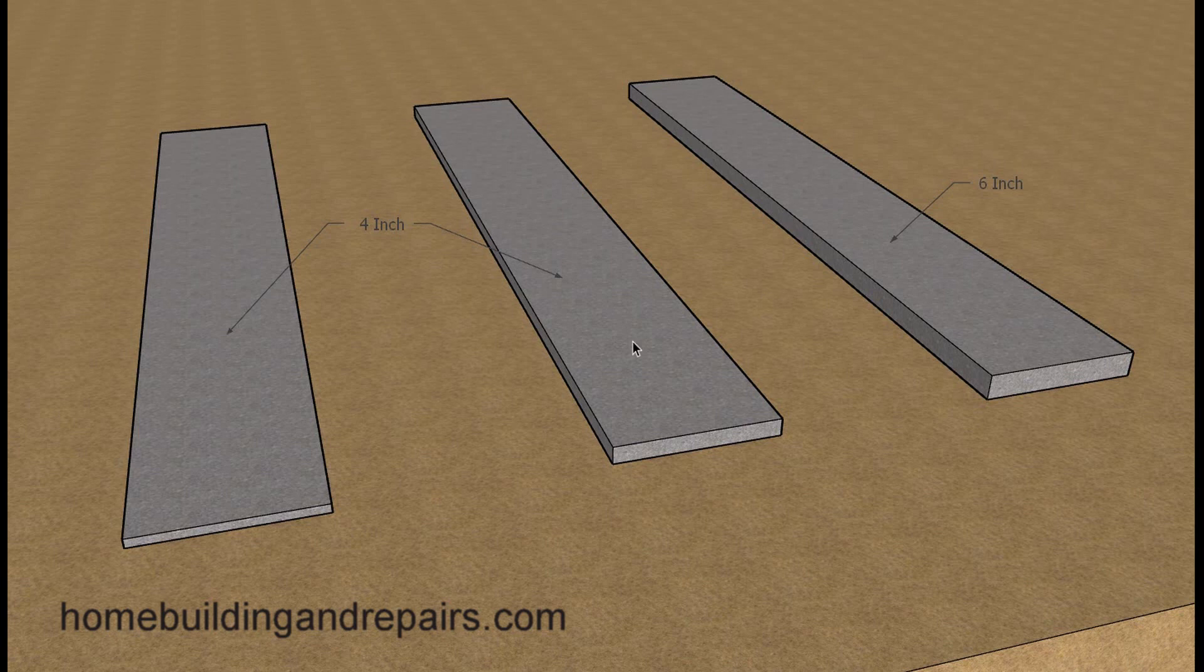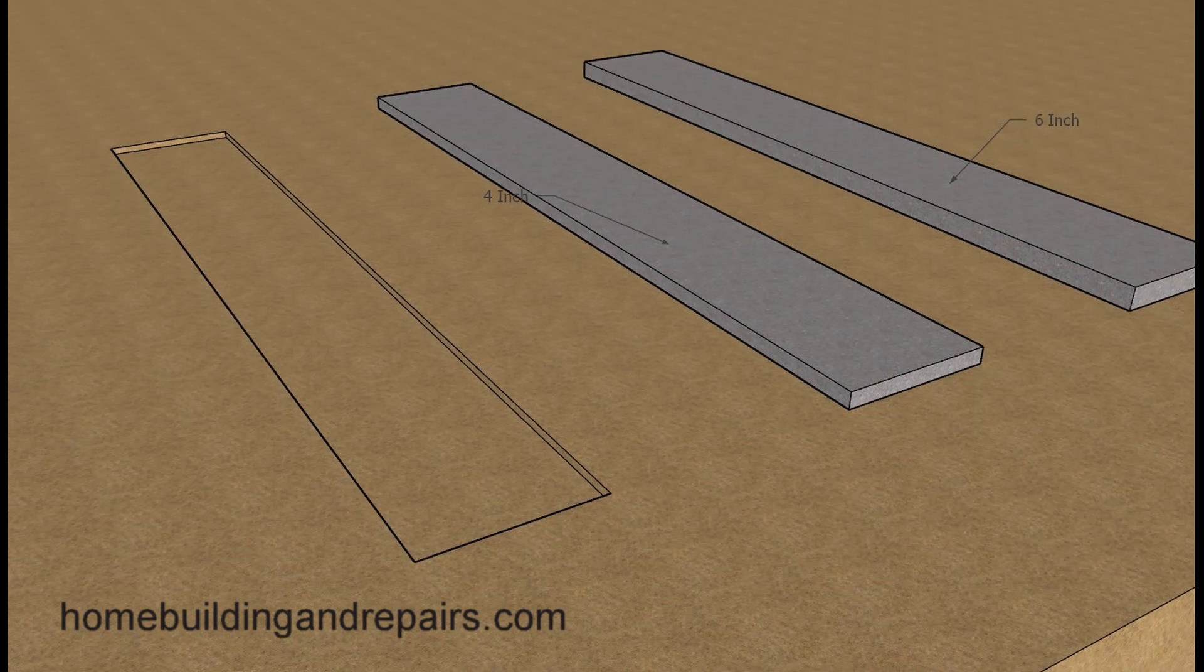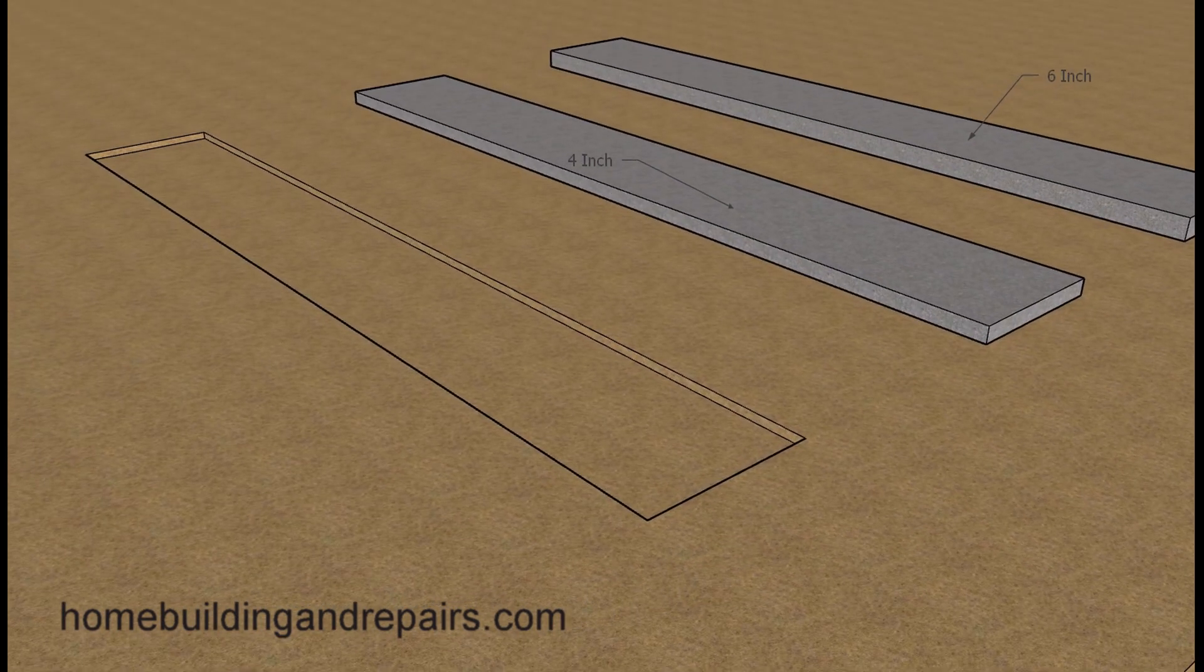We're going to focus on sidewalks. Here we have a six-inch sidewalk sitting on top of the soil, a four-inch one sitting on top of the soil, and here is a four-inch one that is sitting in the soil. Let's take a look at that to give you an idea of what that looks like.